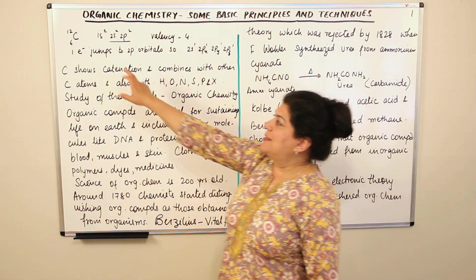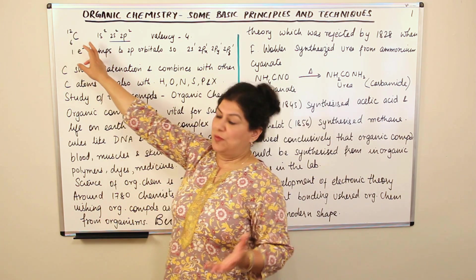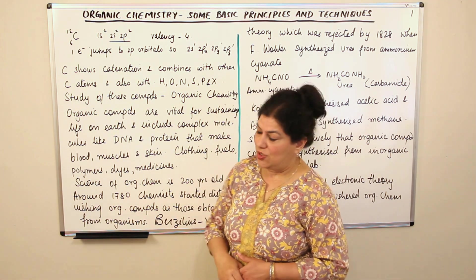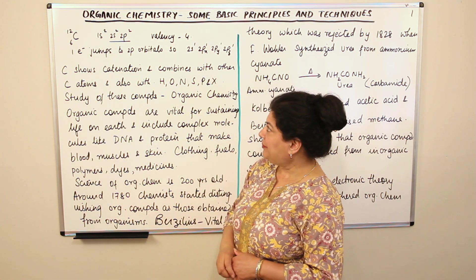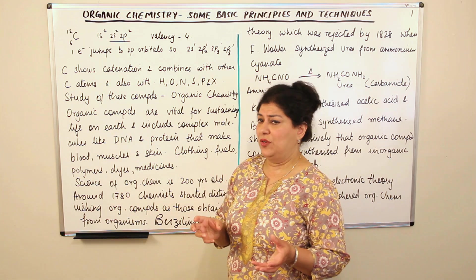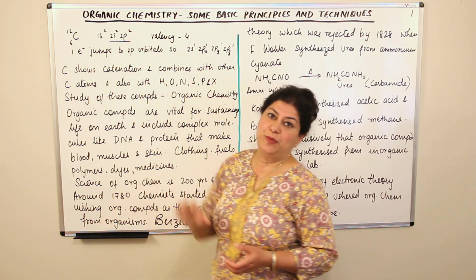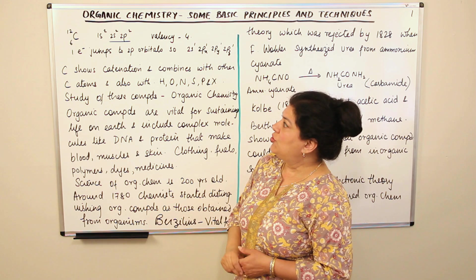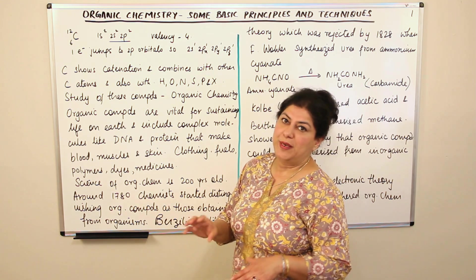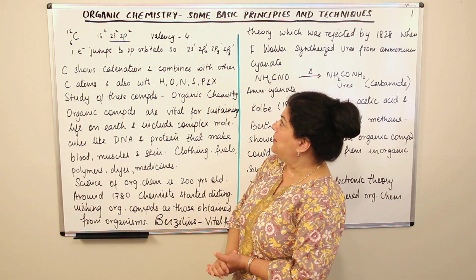Carbon is the sixth element. It has six protons and six electrons and atomic mass is 12. The electronic configuration of carbon is 1s², 2s², 2p² — more specifically 1s², 2s², 2px¹, 2py¹, and 2pz is empty.